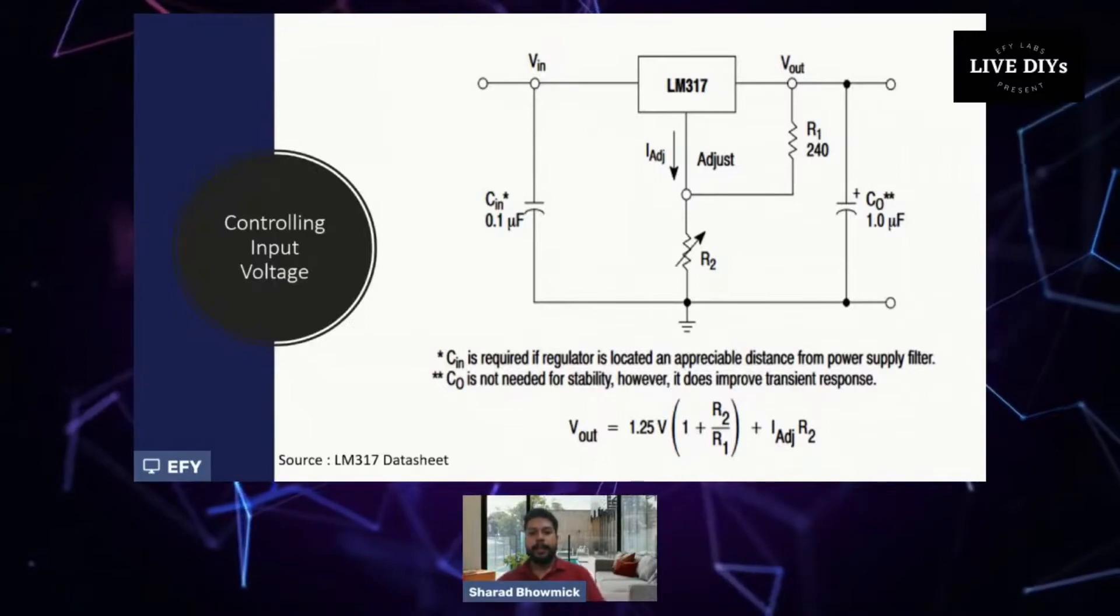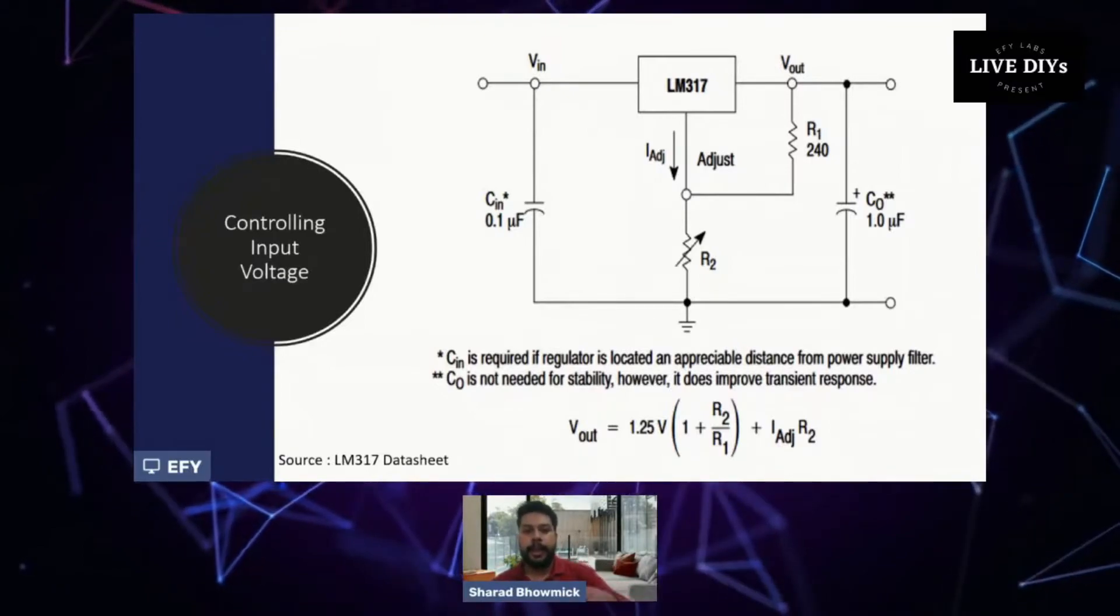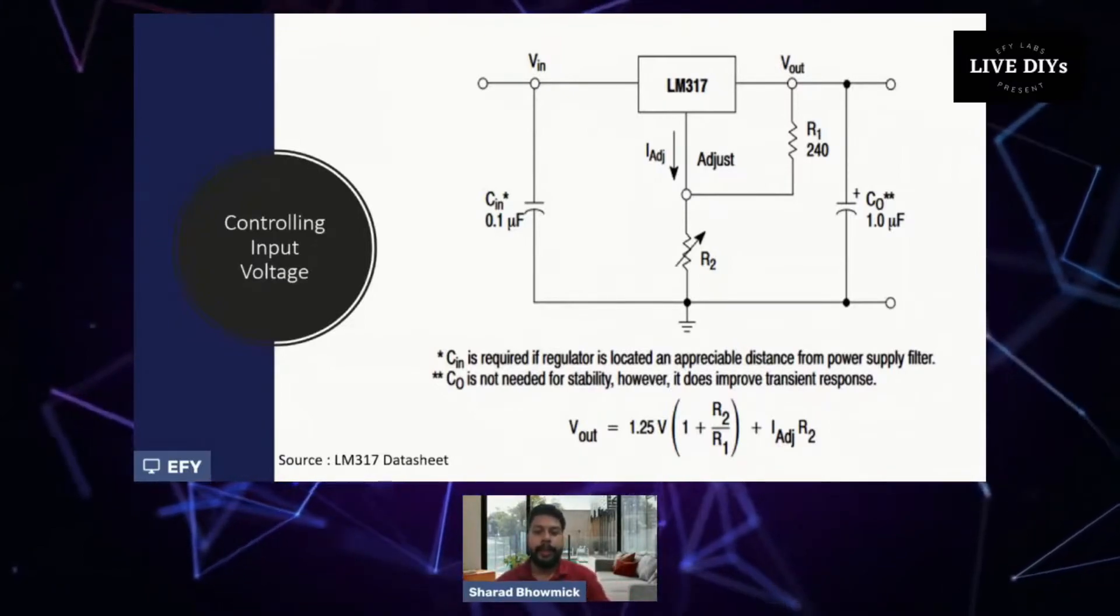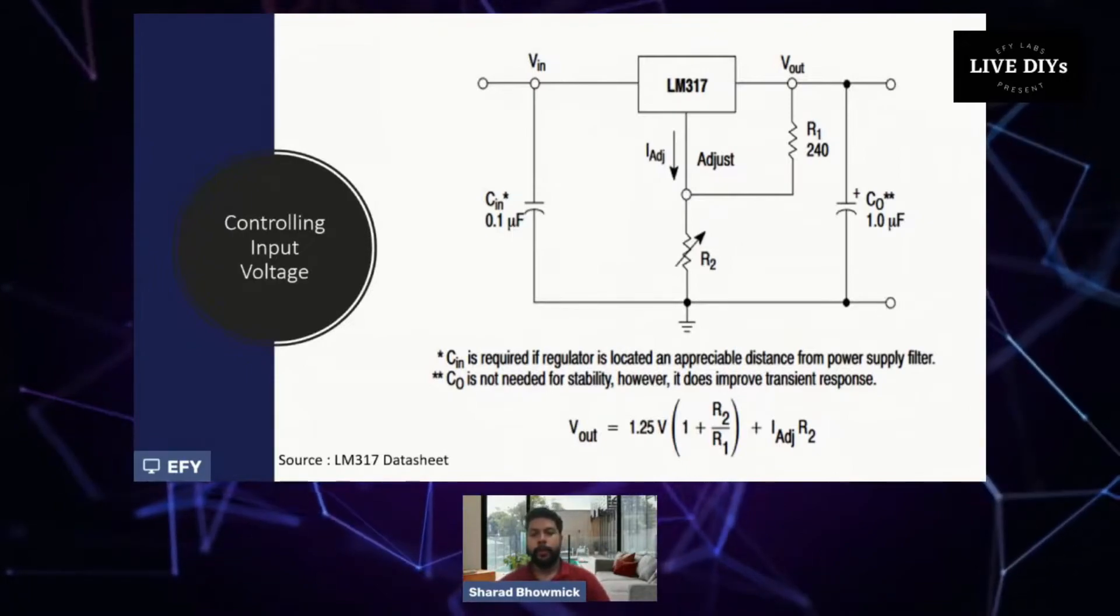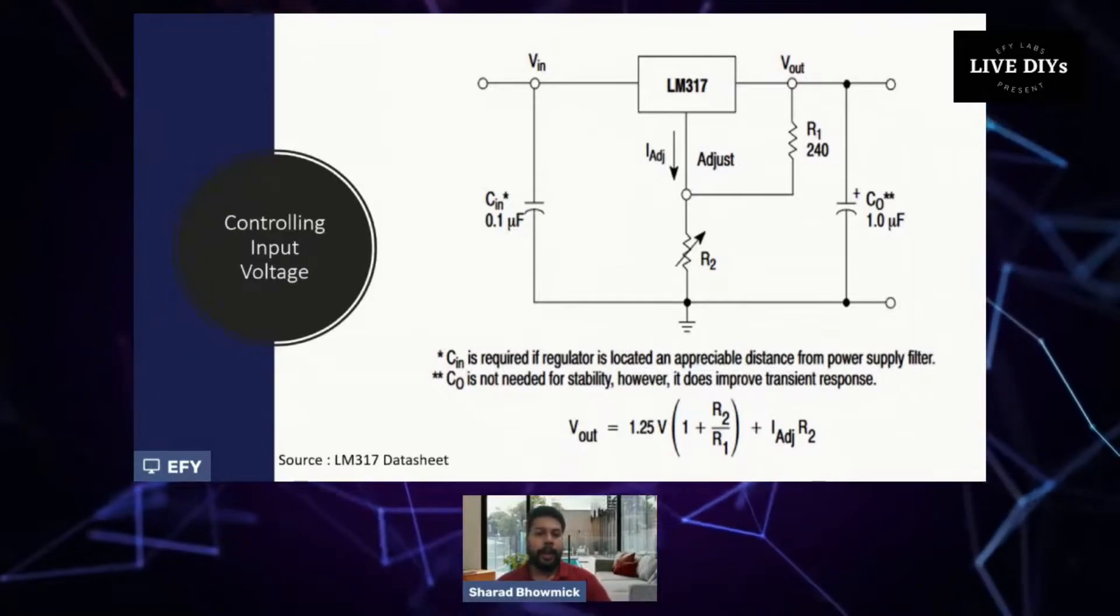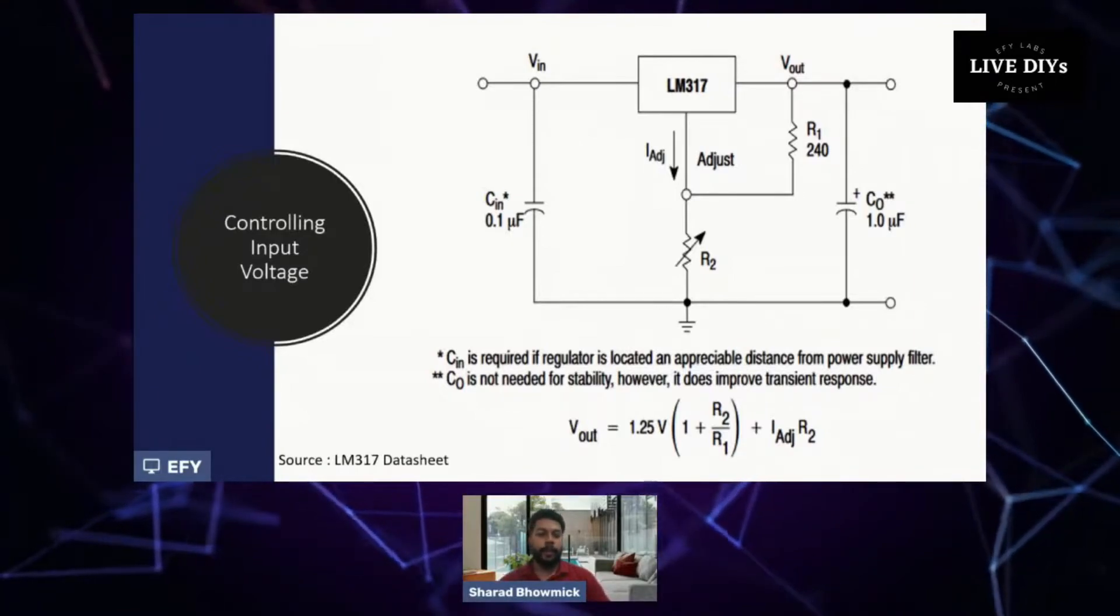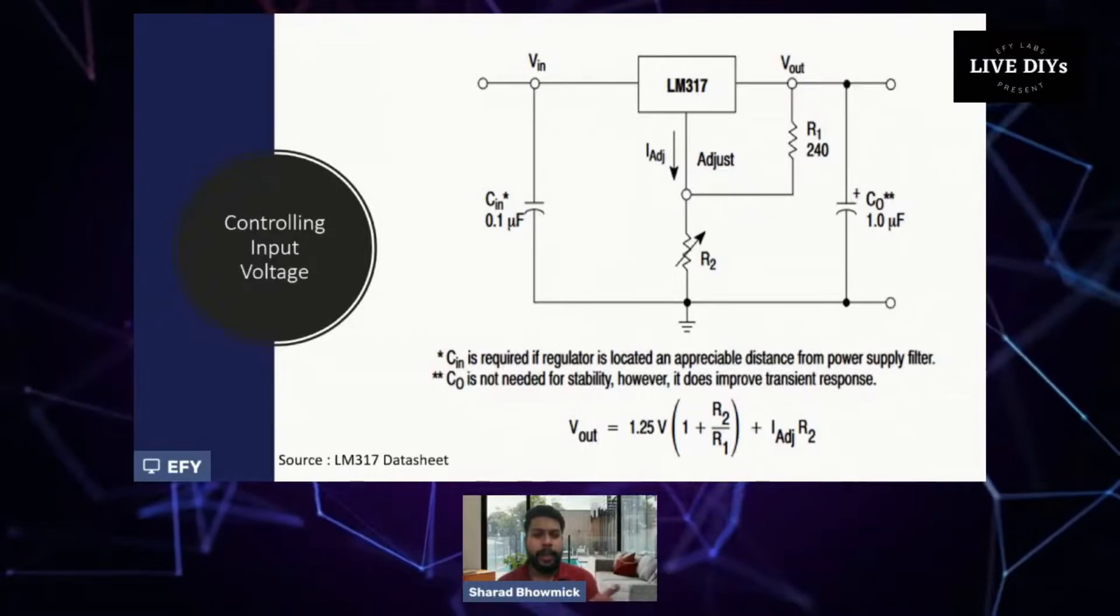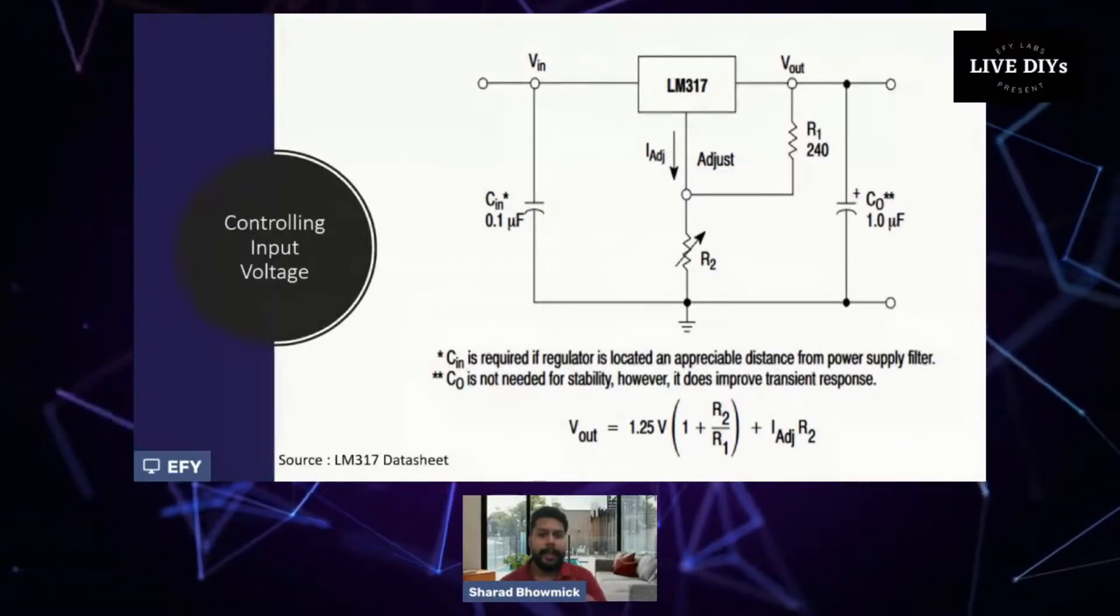It's making basically a resistance bridge and we can change the value of resistance using the formula Vout equals 1.25 times (1 plus R2 by R1) plus I adjust R2. But the I adjust R2 value is very small so we can even neglect that.